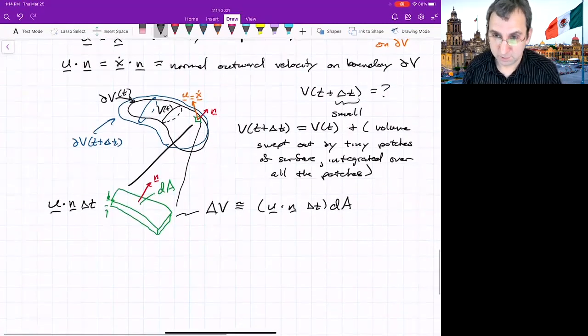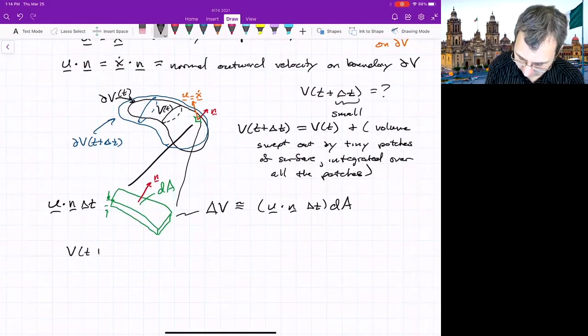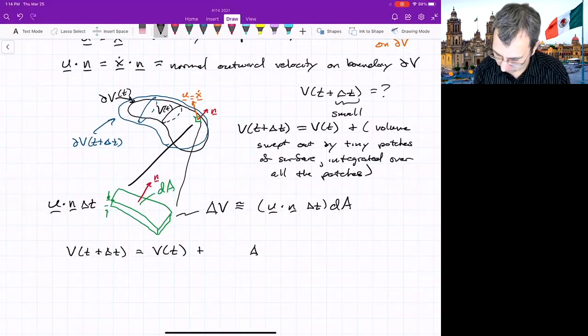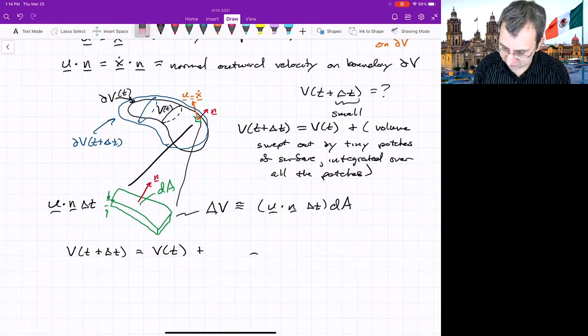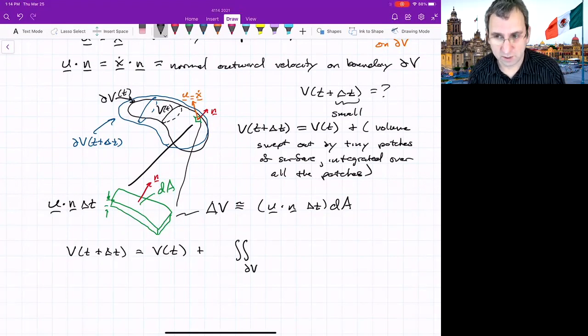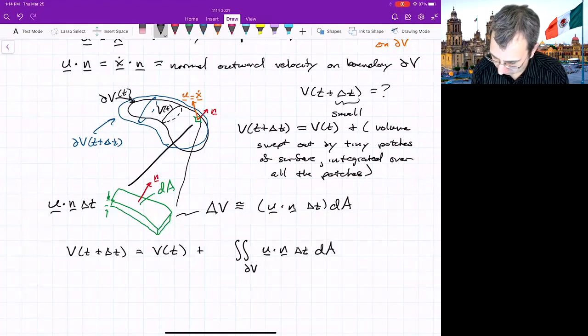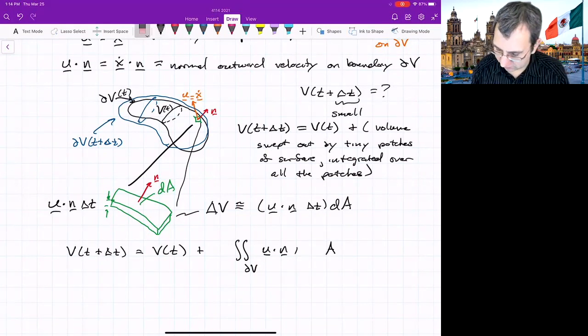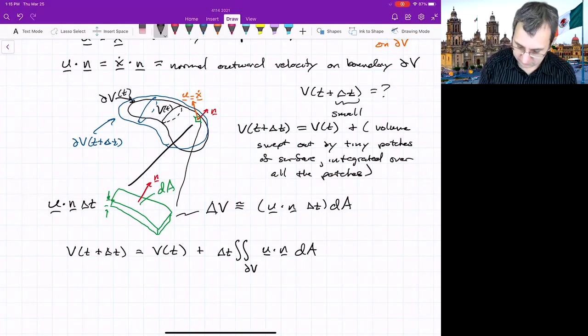We could write the outward normal here. So we could write what the volume is of that tiny patch roughly equal to u dotted with n delta t, right? The thickness times dA. And now we can integrate. So v at t plus delta t equals v at t, volume at t, plus we want to integrate over the volumes. But we're integrating over little patches. So what we really want to do is we're doing a, if you want, a double integral over the boundary. u dotted with n delta t, and then we're integrating over these little patches dA all over the place. The delta t can be brought out because it's not part of the integral. I guess I could put approximate.